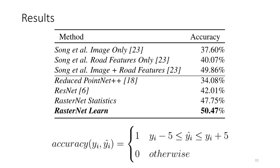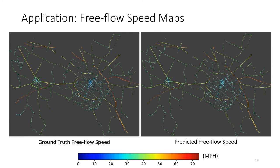We evaluate our approach on a held-out test set using the within-five-mile-per-hour accuracy metric established by Song et al. Our ablation study showed that point cloud features alone from reduced PointNet++ and image features alone from ResNet did not perform as well as the two RasterNet variants that used feature fusion. Our RasterNet Learn model using learned point cloud features outperformed the RasterNet Statistics model and the previous state-of-the-art method by Song et al., which required geometric road features. Finally, our approach can be used to generate free flow speed maps — the depicted map illustrates free flow speeds of roads from the city of Lexington, Kentucky, where the low-speed urban center in teal is clearly distinguishable from the high-speed highways in red.